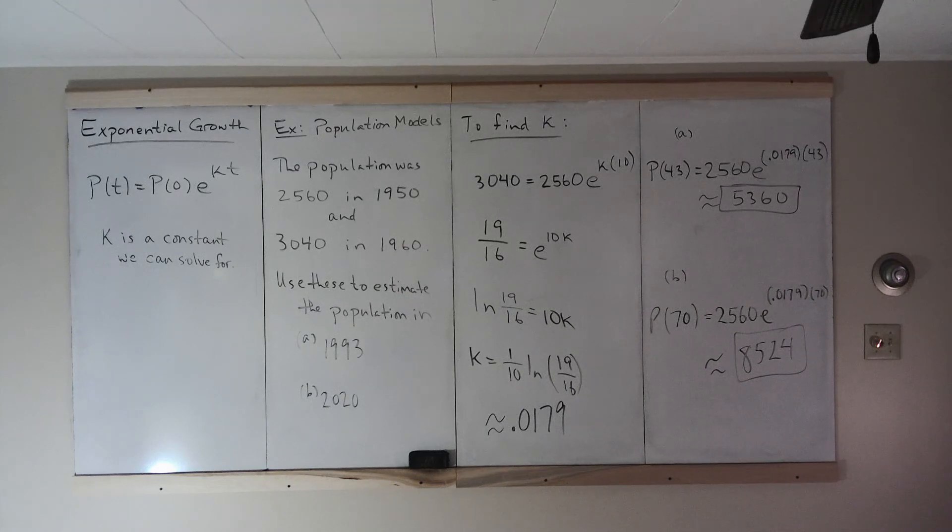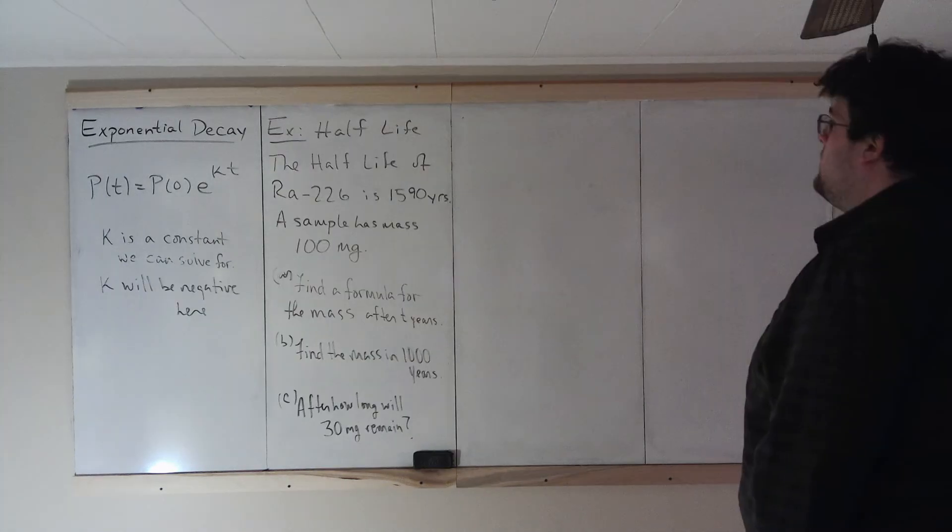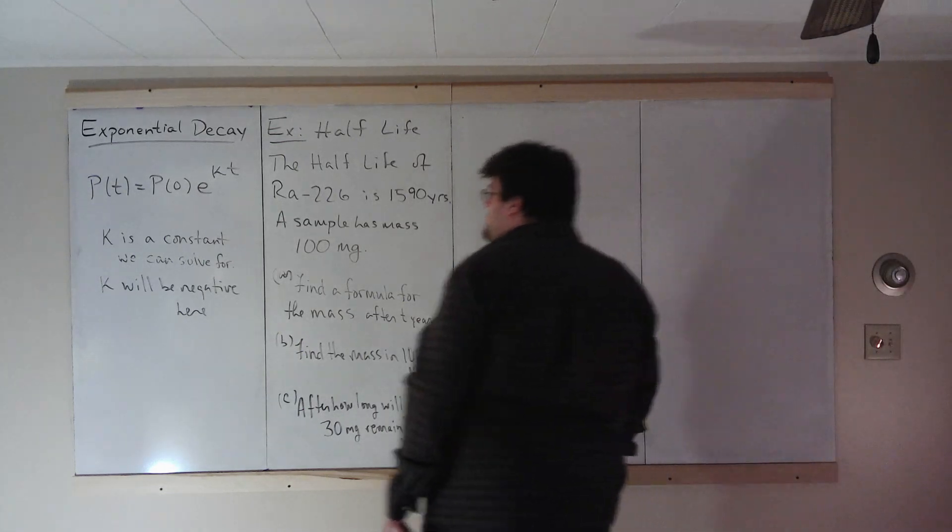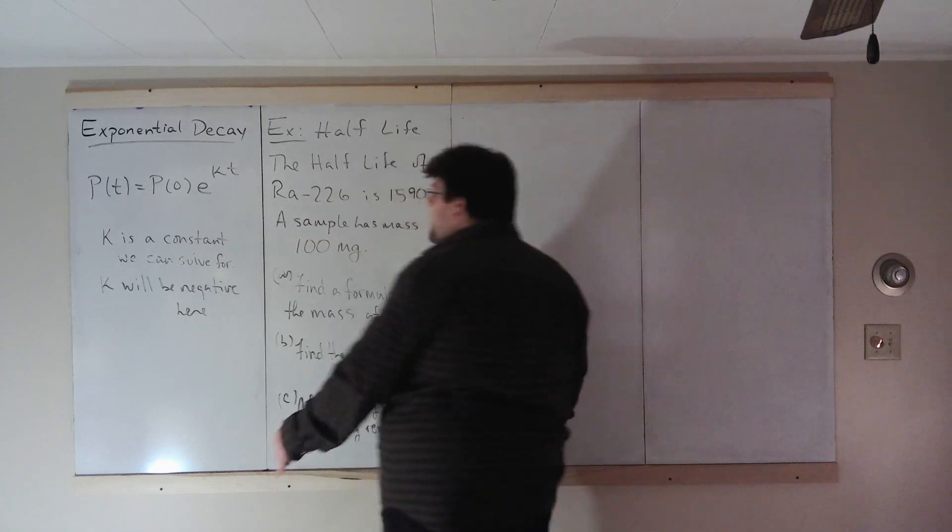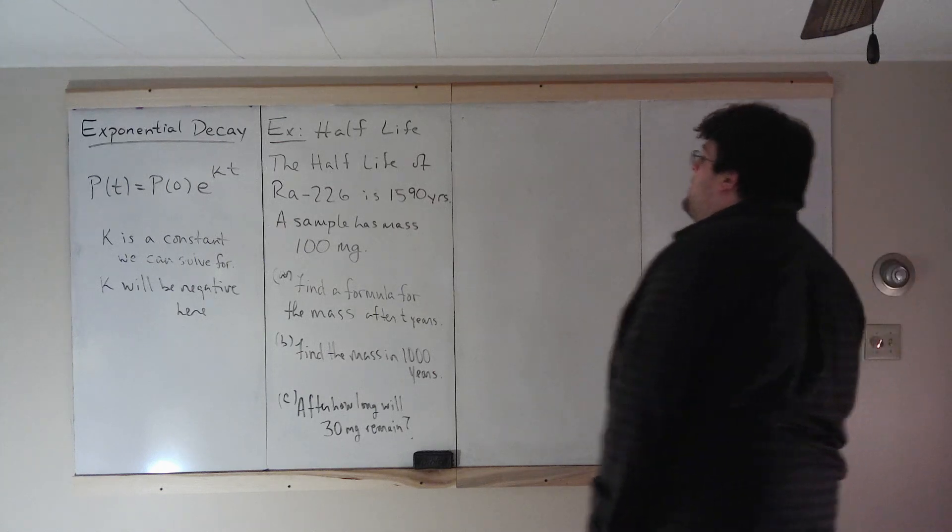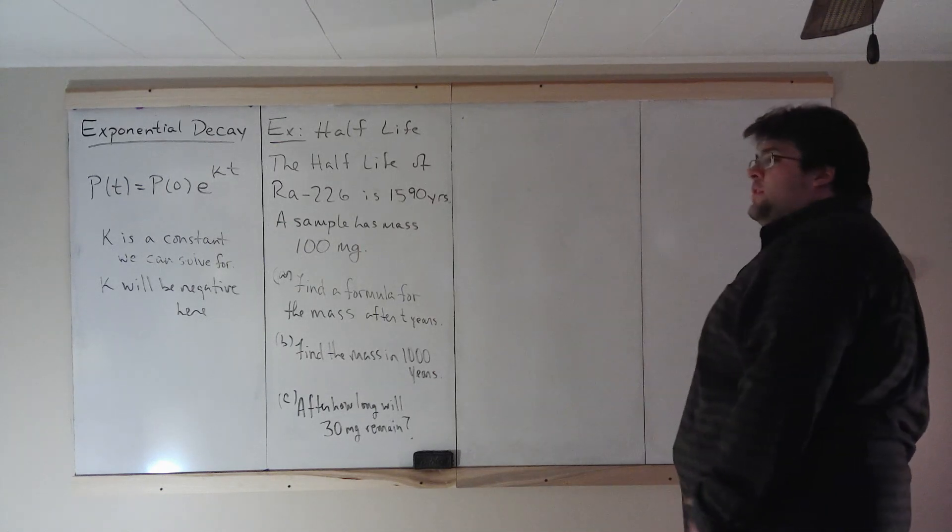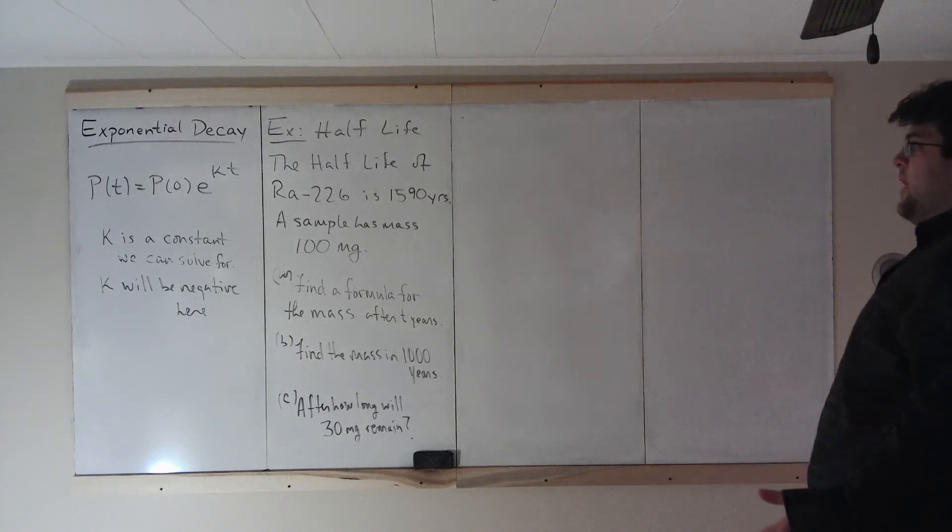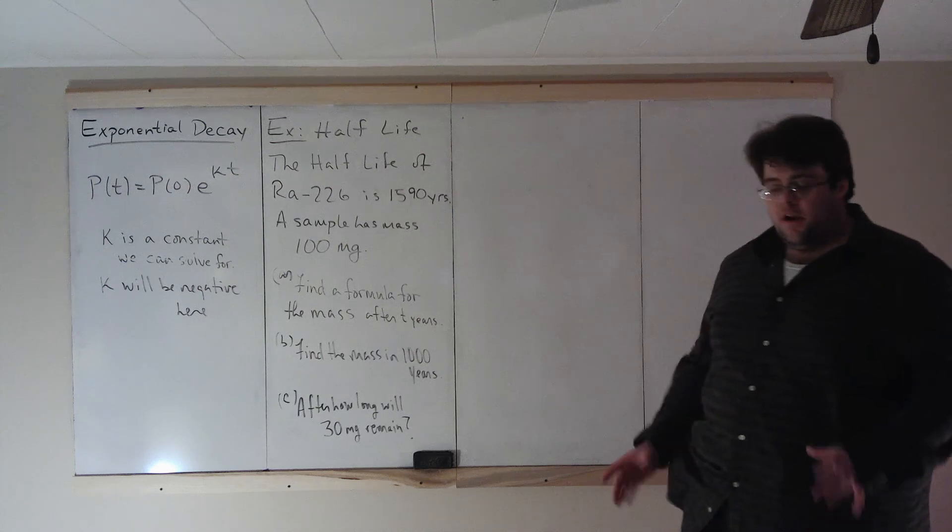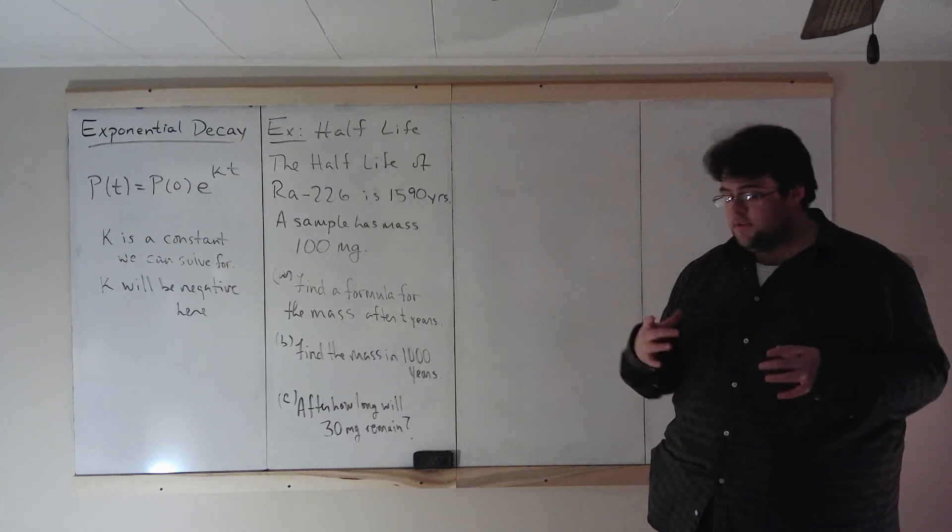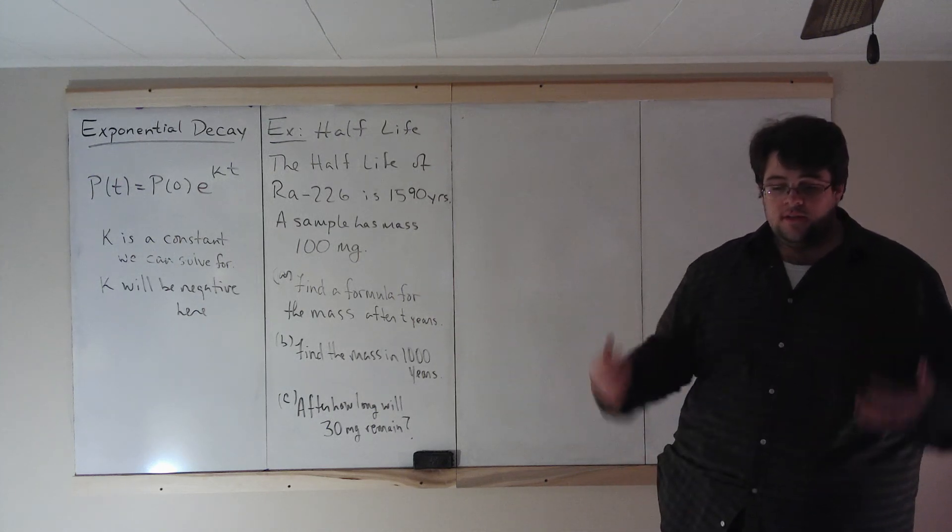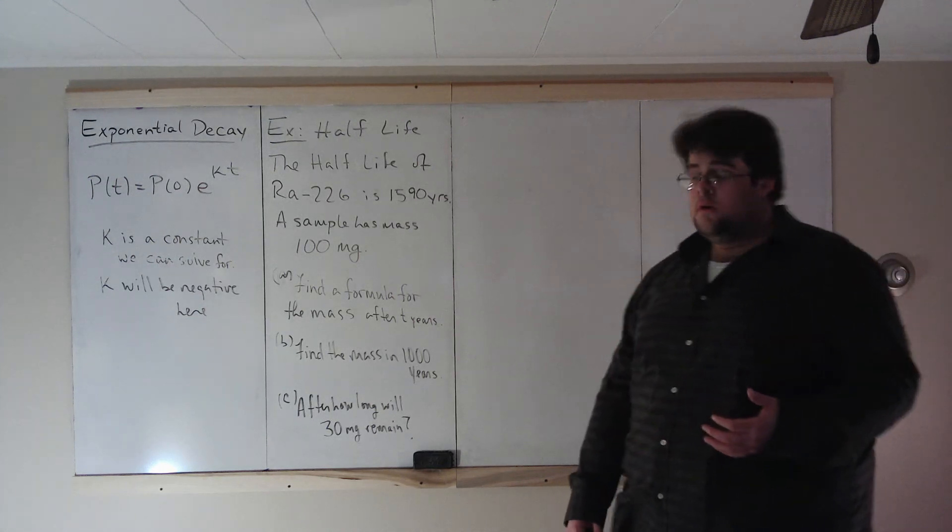Let's look at an example of exponential decay. Exponential decay follows the same formula, except, note, that k will be negative here. The k value will be negative. That'll indicate a decay. So we're actually going to look at two examples of exponential decay. First, we'll look at half-life.